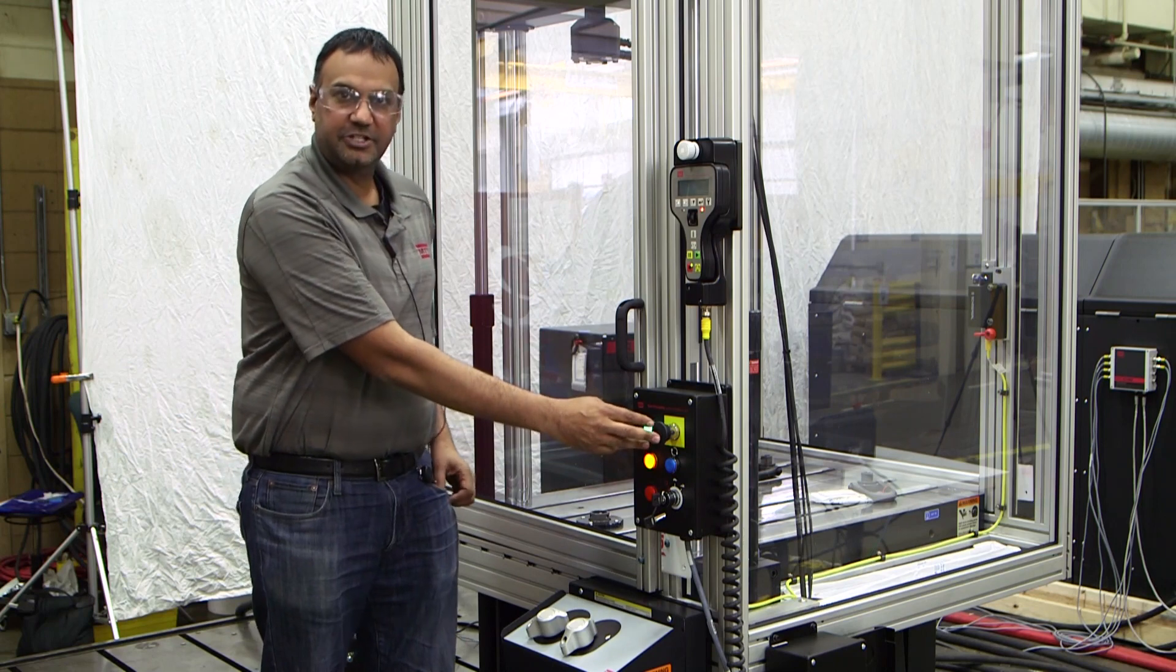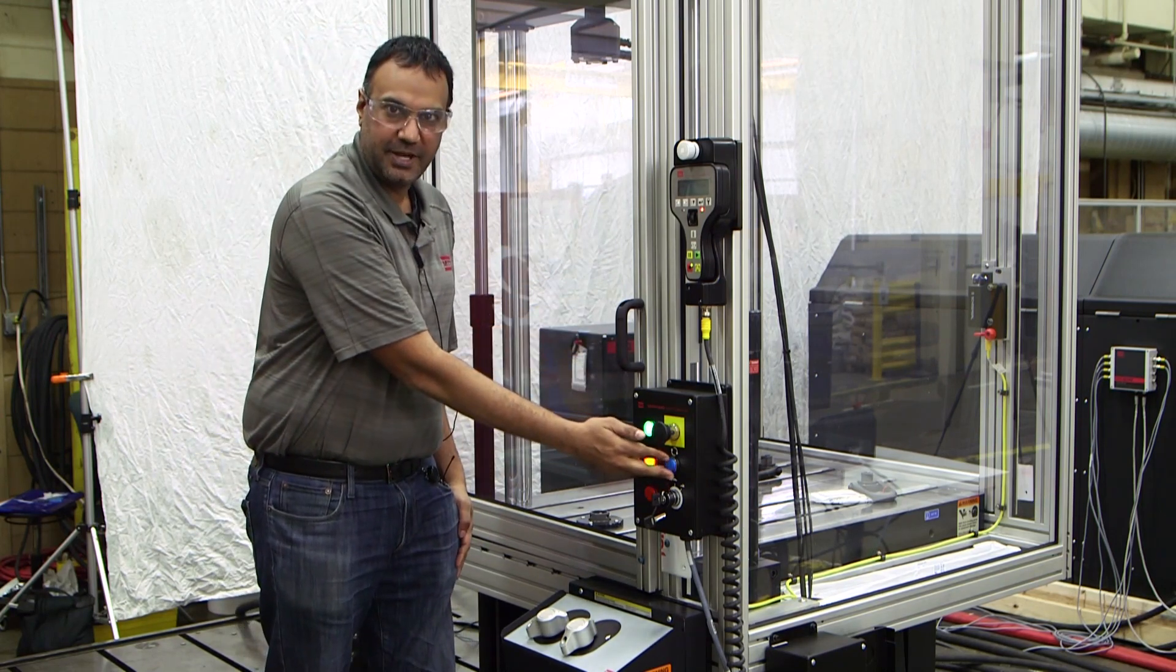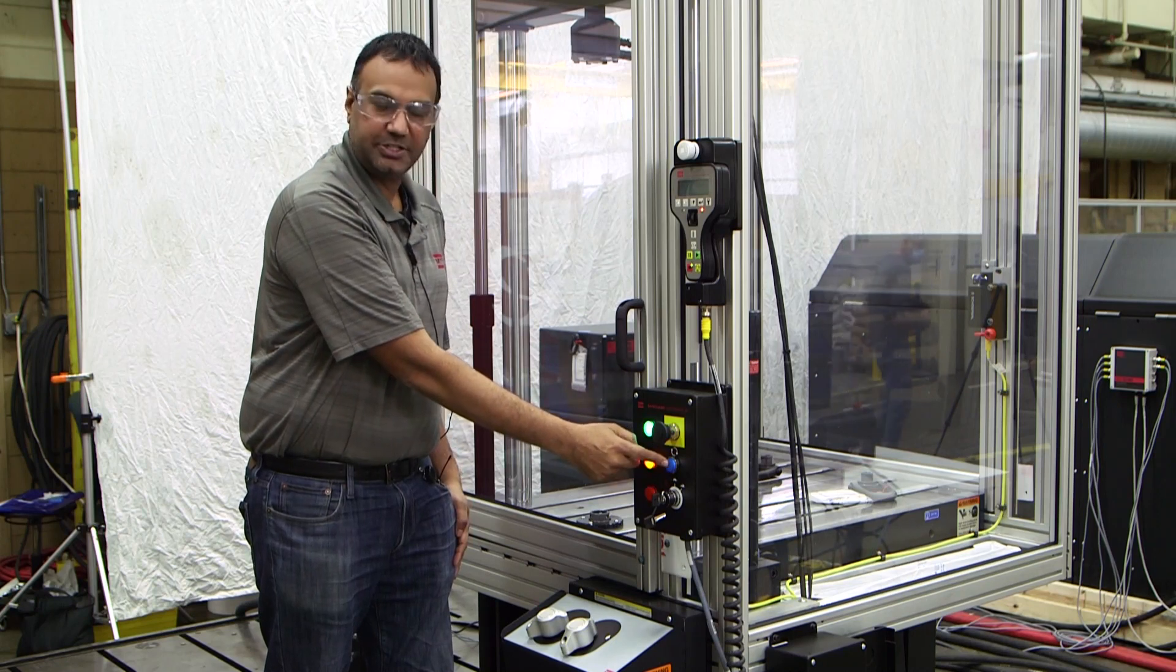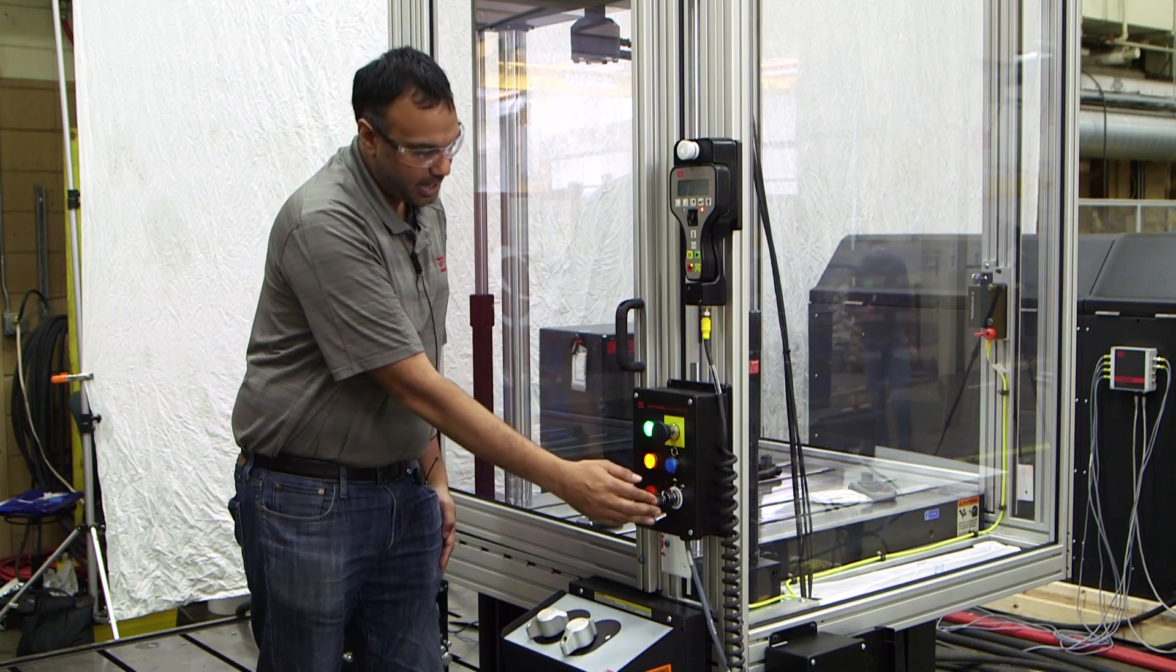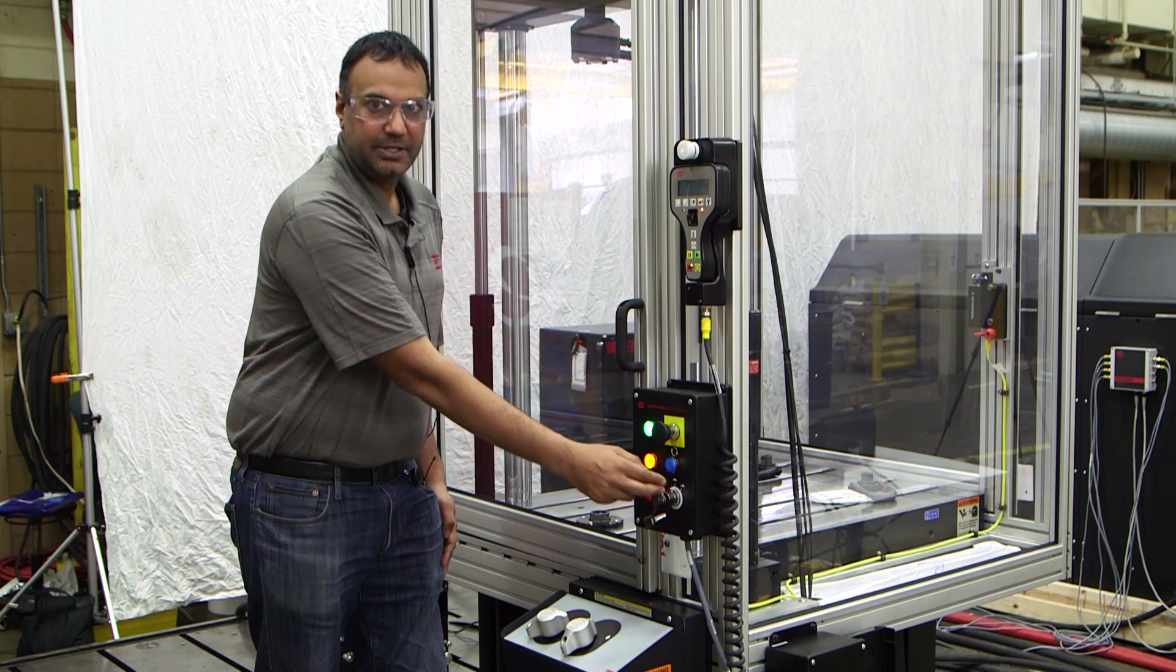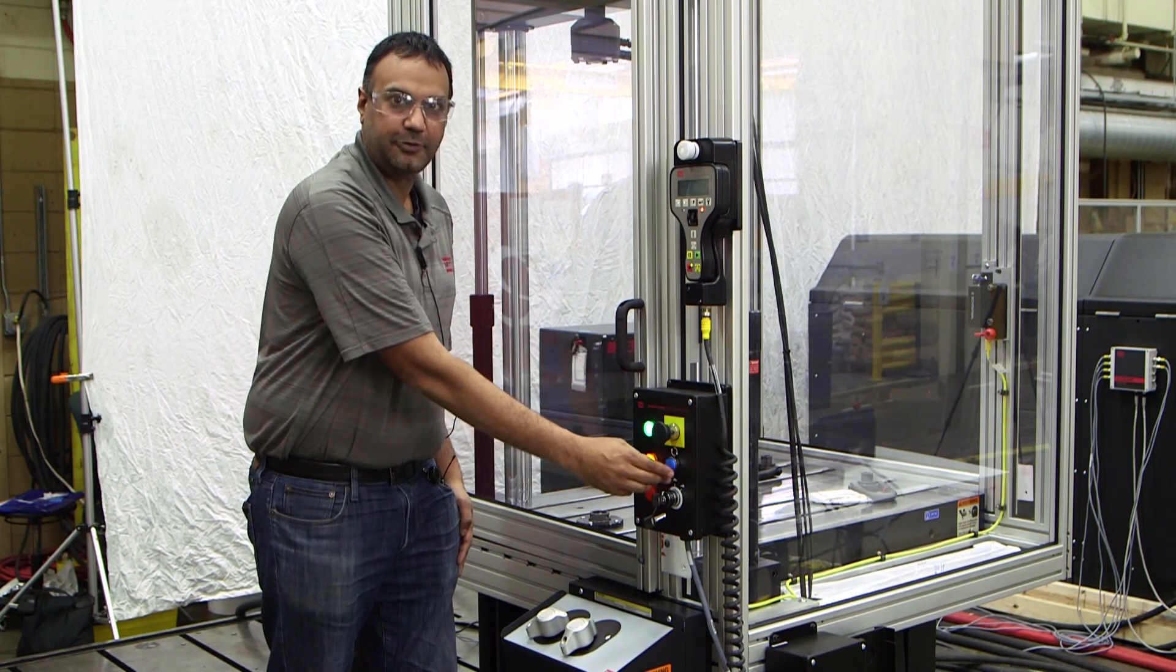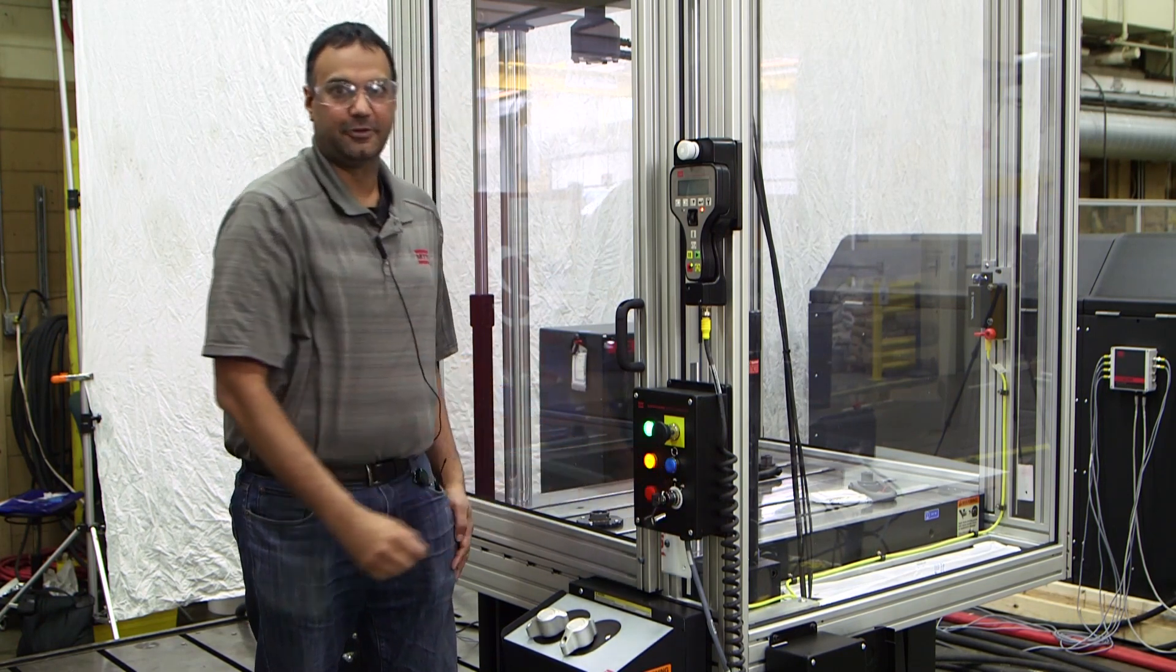We have a station stop which will stop the station. We have an alarm reset button and an indication to tell us if we have an alarm, and we have a mode switch off turtle rabbit to turn off the station for off, turtle for low flow, and rabbit for high flow.